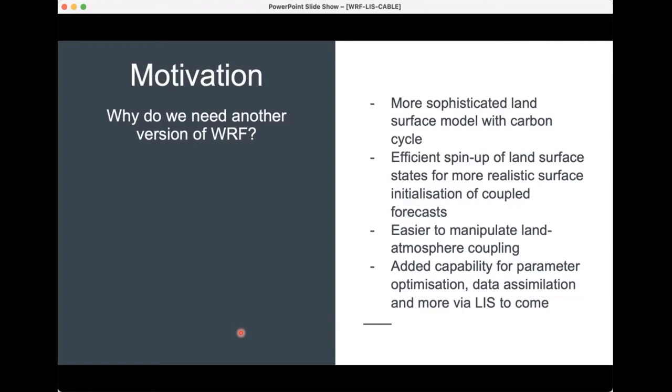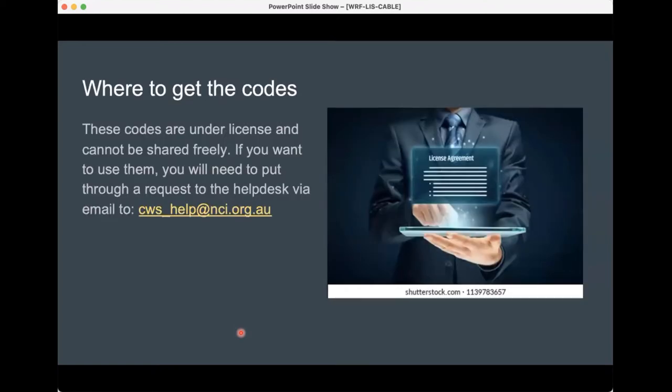Hopefully I've convinced you this is a model you might want to start using. The next logical question is: where do I get the code? It's worth pointing out that there are three different systems. WRF is generally open source, but we're using NASA's unified version. CABLE is a community-based model requiring a license agreement to access. LIS, paired with NuWRF, is developed by NASA and is under license — CLEX has a long-standing agreement with NASA to use the LIS system.